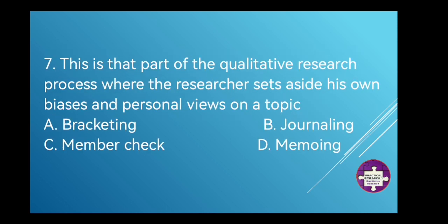For number 7, this is the part of the qualitative research process where the researcher sets aside his own biases and personal views on a topic. A. Bracketing, B. Journaling, C. Member Check, or D. Memoing. And the correct answer is A. Bracketing.